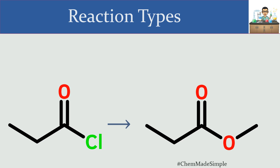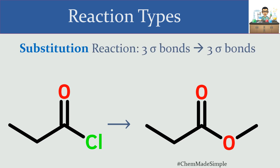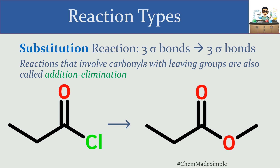In this reaction, there's one pi bond on the left and one pi bond on the right — substitution reactions preserve your number of Sigma and pi bonds, everything stays the same. However, when talking about carbonyls with possible leaving groups attached — like chlorine or an oxygen in the right conditions — these are sometimes called addition-elimination reactions. On certain exams like the MCAT, this type of reaction is specifically called an addition-elimination reaction, not a substitution reaction.